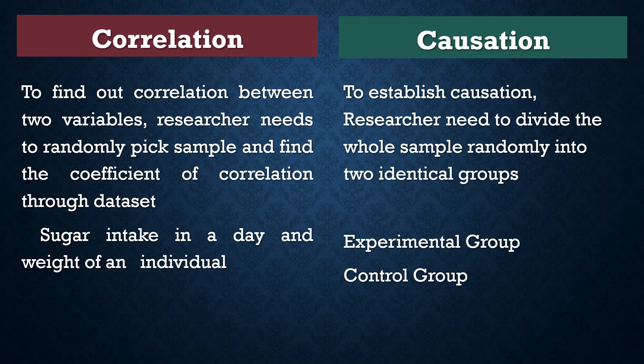But to establish causation, the researcher needs to divide the whole sample randomly into two identical groups — experimental and control. People in the experimental group will have sugar intake, but people in the control group will not have any sugar intake. After the intervention, their weight will be measured. If there is a difference in weight, we can say that sugar causes obesity, as all other factors have been controlled.